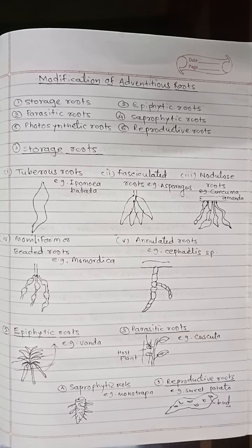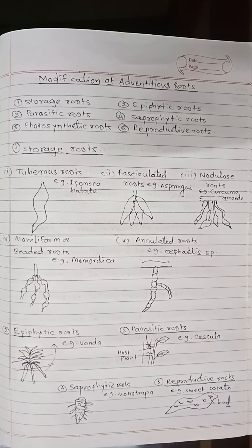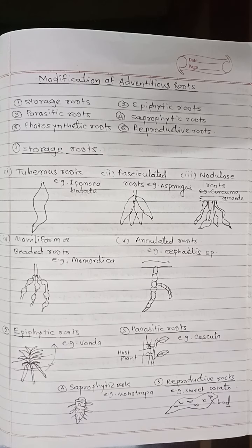Next is moniliform or beaded roots. These adventitious roots are swollen at frequent intervals, which gives the root a beaded appearance. These roots are found in Momordica. The last storage root type is annulated roots. The roots of medicinal plants — Cephaelis species yield emetine — look like discs placed one above another, and are therefore called annulated roots.